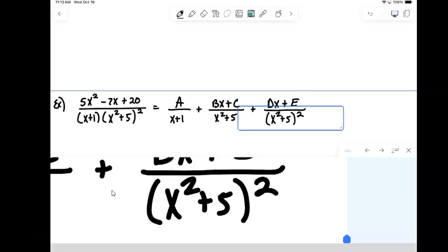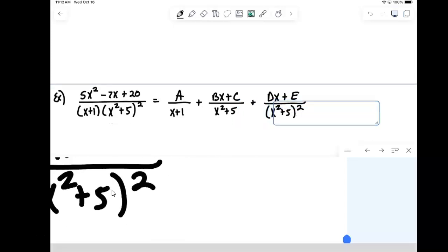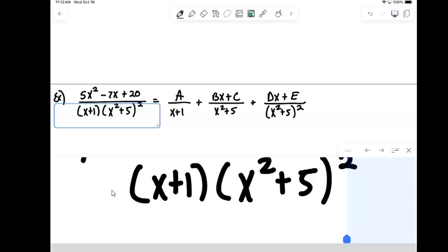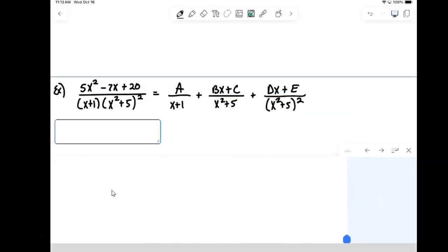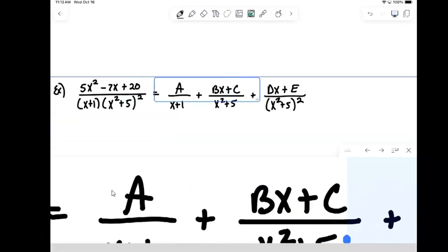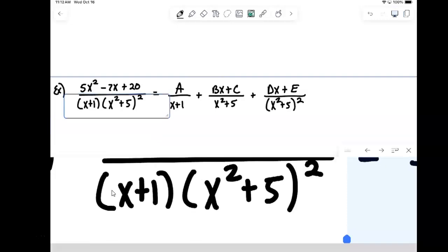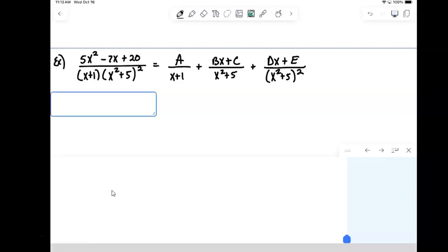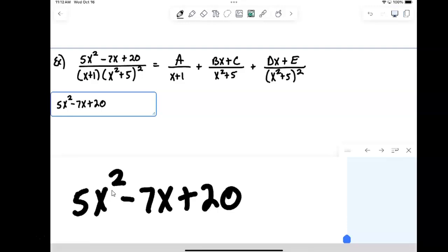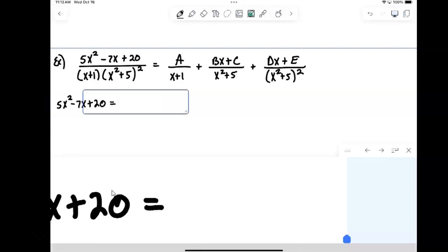And then we want to multiply through by our common denominator. That's always the process. Step one is to set up your decomposition. And now we eventually want to solve for a, b, c, d, and e. So we first multiply everything by our common denominator. On the left side, we're going to have 5x squared minus 7x plus 20, just going to get the numerator.